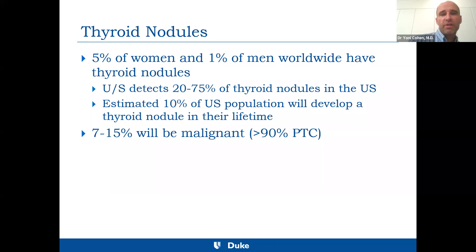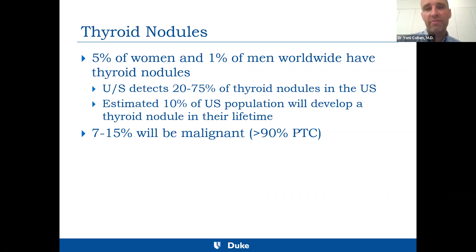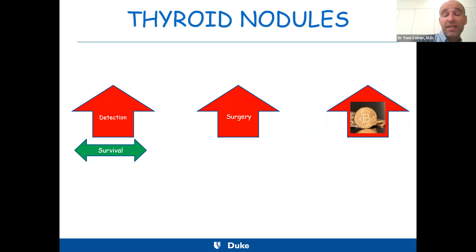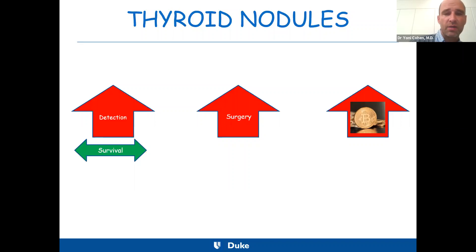Thyroid nodules is a very common problem. Clinically, about one percent of women will have a thyroid nodule, but when you look sonographically, many more people will have it — up to two-thirds or three-quarters of the population — but only a small percentage of these will actually be malignant. Over the past several decades, it's becoming an increasing problem just because we see a lot more of these, probably due to the fact that we do a lot of imaging studies and we detect a lot of incidental nodules.